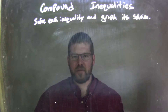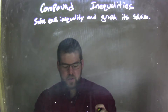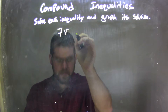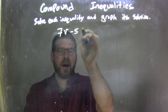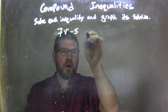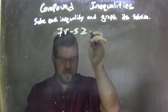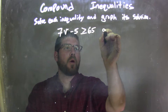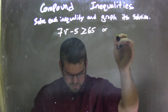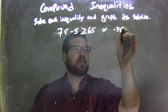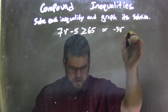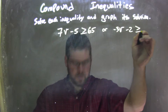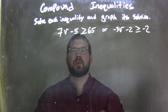I'm going to solve each inequality and grab that solution. So if I was given this inequality: 7V minus 5 is greater than or equal to 65, or negative 3V minus 2 is greater than or equal to negative 2.